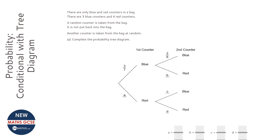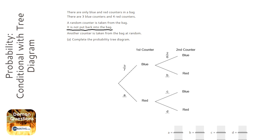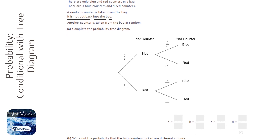This question involves a probability tree diagram. It says the counter is not put back in the bag, so we know it's conditional. Conditional means that the probability of the second event — taking the second counter — depends on what you did the first time around.